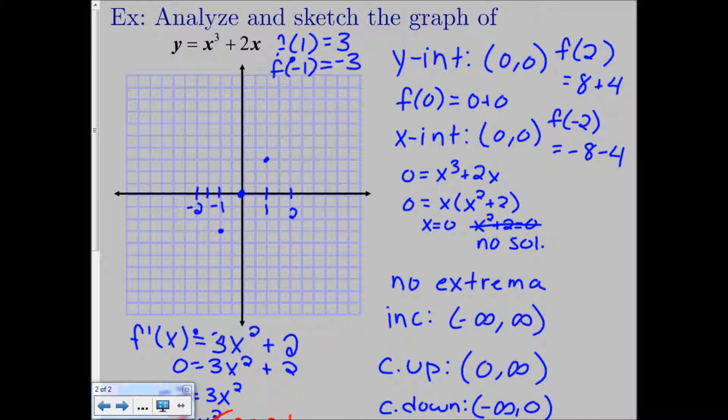So like we said, we were increasing and concave down. So it looks like we're probably doing something like this. And then at 0, we changed to concave up and increasing. So something like this maybe.